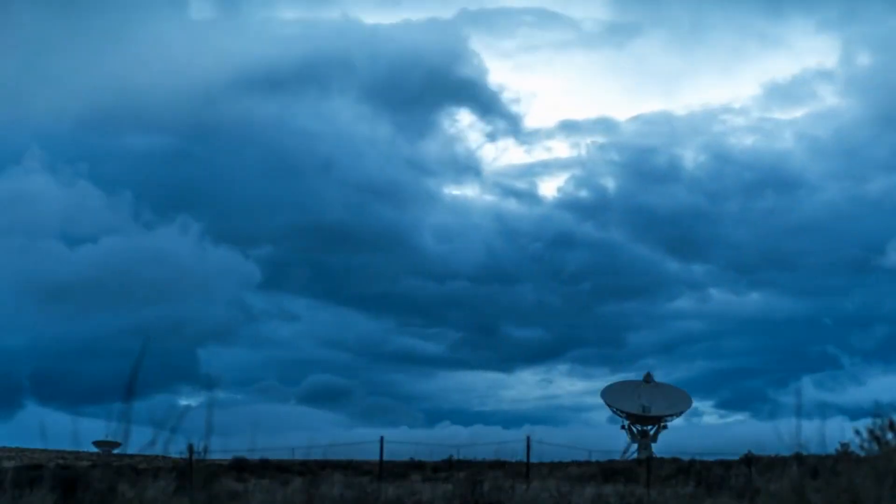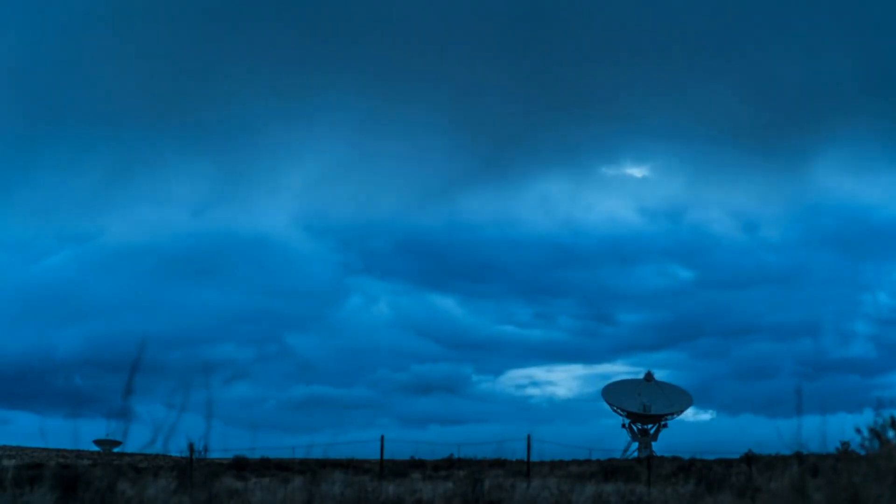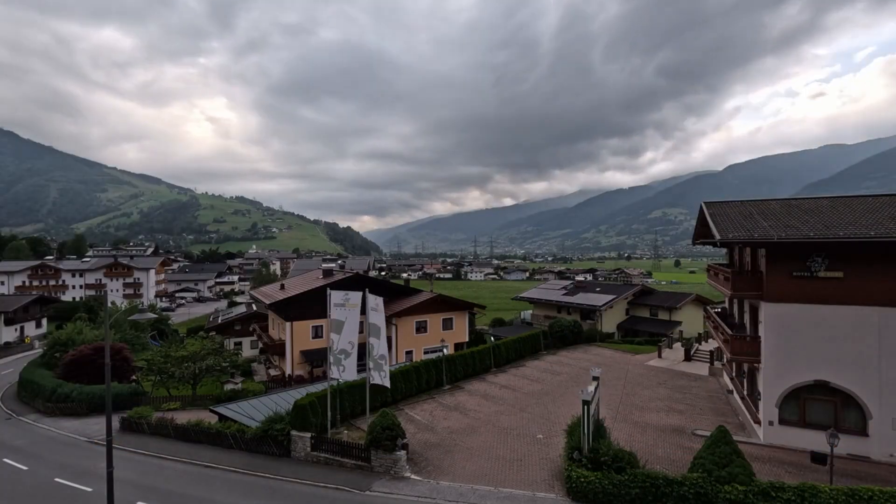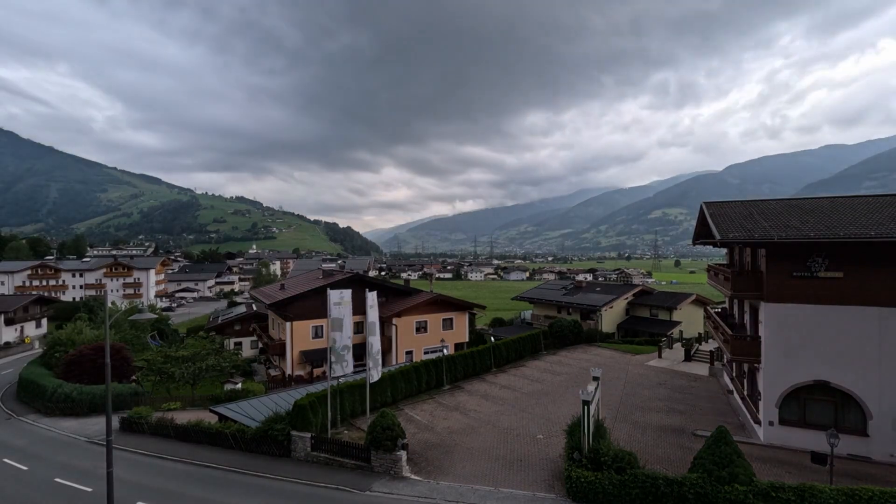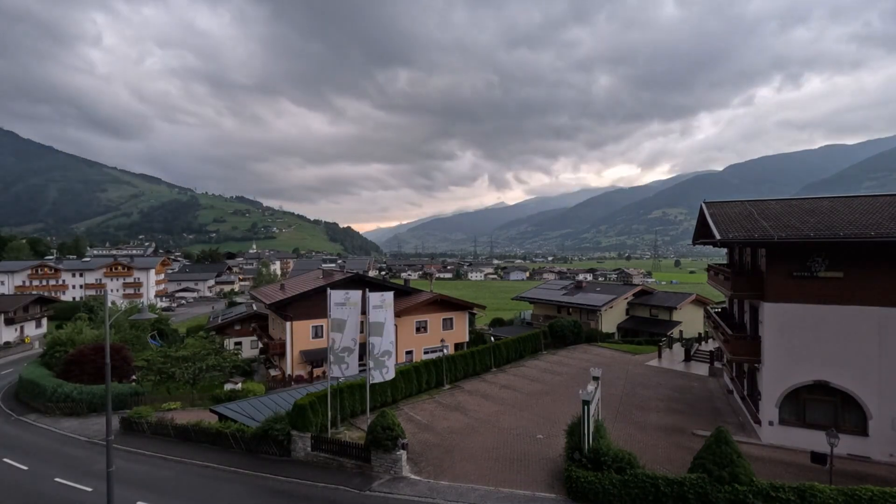The detection of such clouds in VHS-1256b's atmosphere was made possible by Webb's advanced infrared capabilities. Unlike visible light, which is easily scattered and absorbed by dust and gas, infrared light can penetrate these obscuring materials, providing a clearer view of the underlying atmospheric conditions.